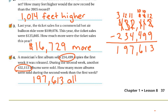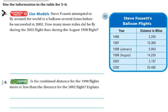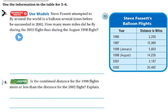Make sure you write the label — albums. That's how many more were sold during the second week than the first week. I know this video is a little bit longer, but word problems can be tricky. Let's use models. Steve Foster attempted to fly around the world in a balloon several times before he succeeded in 2002. How many more miles did he fly during the 2002 flight than during the August 1998 flight?